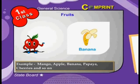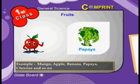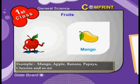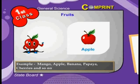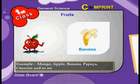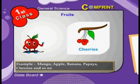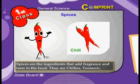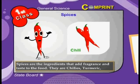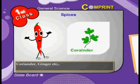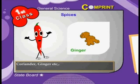Examples of fruits include mango, apple, banana, papaya, cherries, and so on. Spices: spices are the ingredients that add fragrance and taste to food. They are chillies, turmeric, coriander, ginger, and so on.